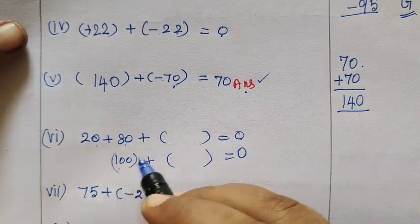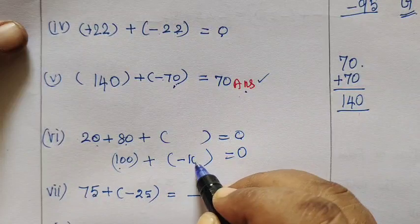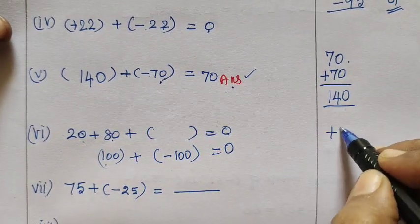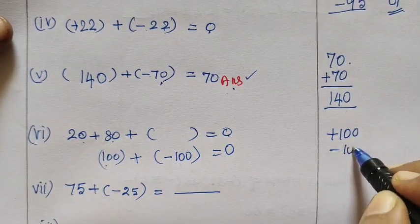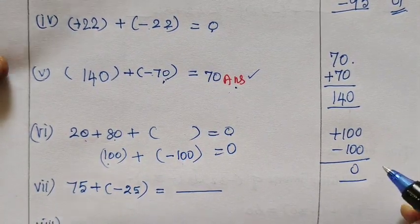So 0 means, what is the answer? Plus 100, what is the answer? Minus 100. Now plus 100 minus 100 will be getting cancelled. The answer is 0.